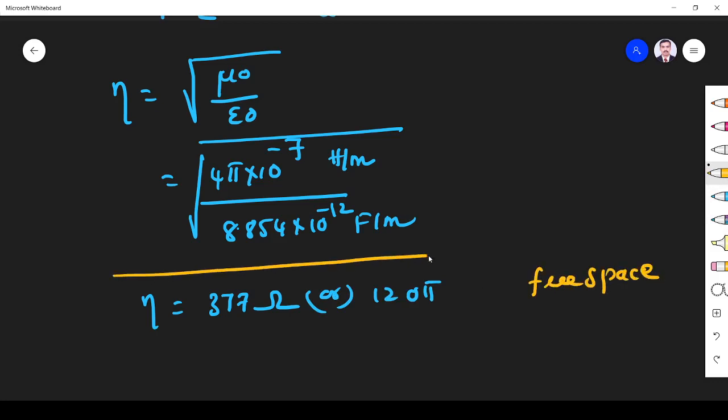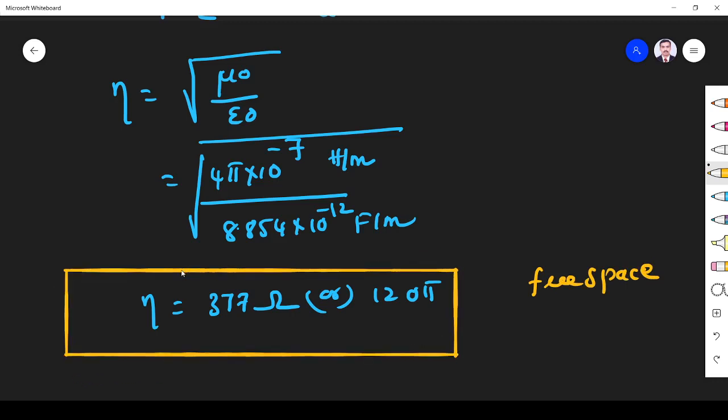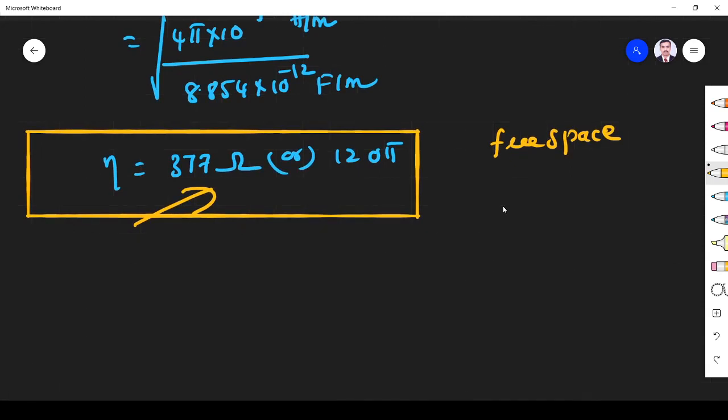So it has a value. When a wave travels through free space, it will face the impedance of 377 ohm. Another thing you have to know about intrinsic impedance is for a medium with conductivity sigma.